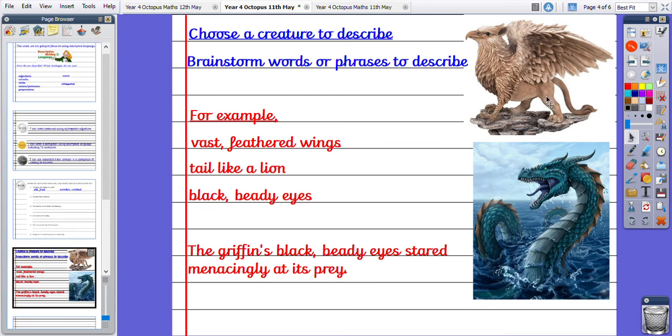He's also got feet like a lion, paws at the back, but the front has got talons like a bird. And he's got wings like a bird. This is a mythical creature. And he's got black beady eyes. And I've gone on to use an expanded noun phrase. The griffin's black beady eyes stared menacingly at its prey.